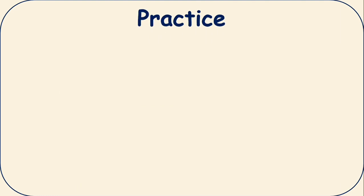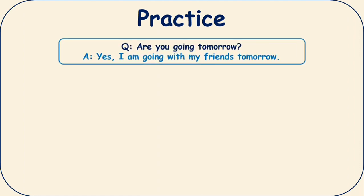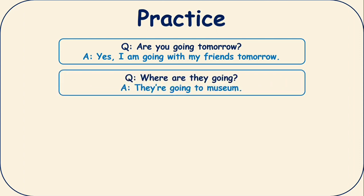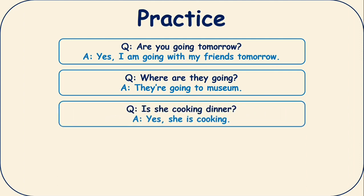Let's do practice. Question one: if someone asks you, are you going tomorrow? Your answer should be: yes, I am going with my friends tomorrow. Number two: if they ask you, where are they going? So you can say, they are going to museum. Number three: is she cooking dinner right now? So you can say yes, she's cooking.